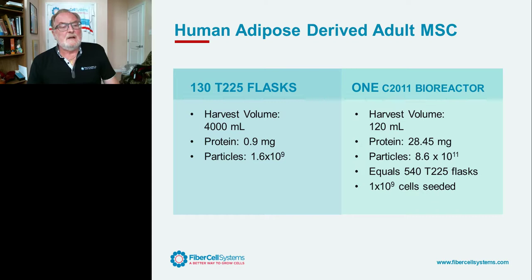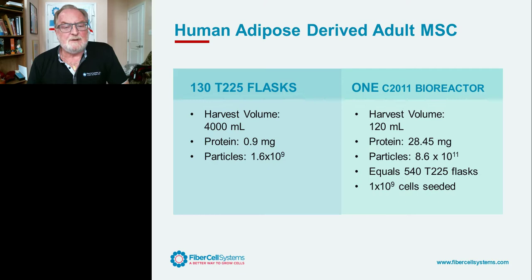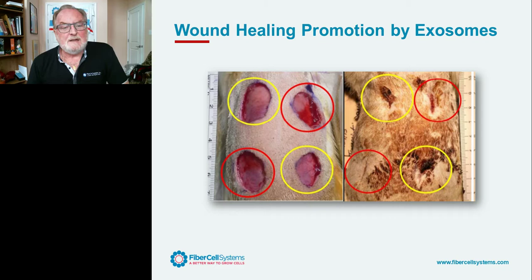Initial work with human adipose-derived mesenchymal stem cells in one C2011 bioreactor, harvesting once a week, generated approximately 9 times 10^11 to 10^12 EVs — equivalent to 540 T-225 flasks. EV production varies depending on cell type, harvesting frequency, and other factors. In terms of bioactivity, we demonstrated enhanced wound healing activity from these exosomes in a rat wound healing model.